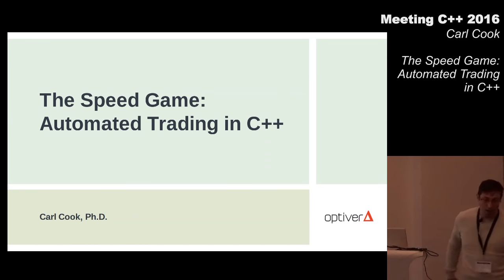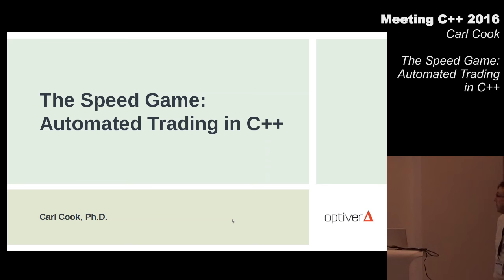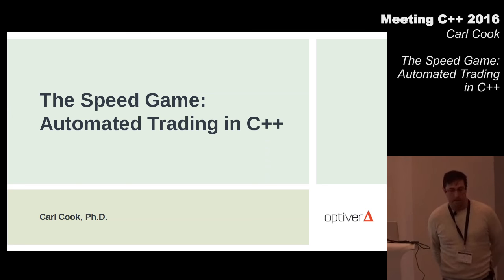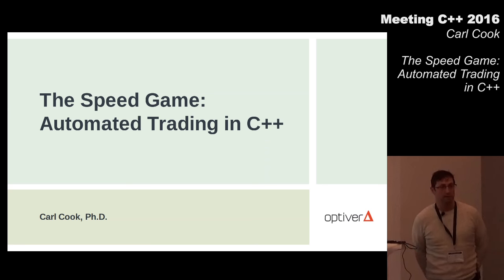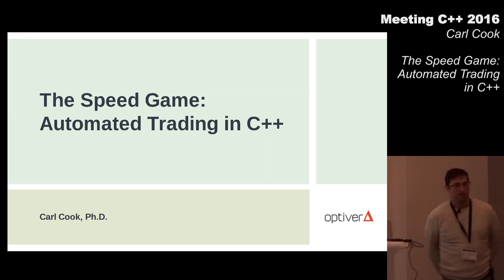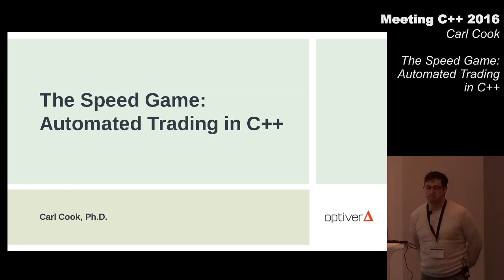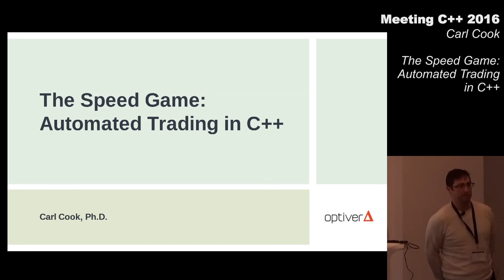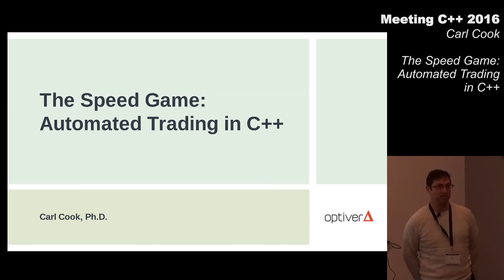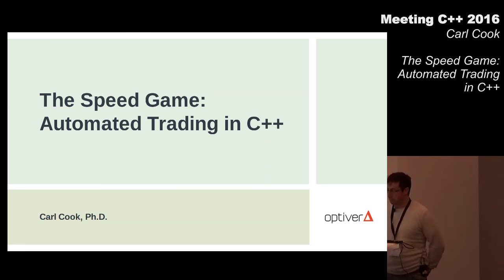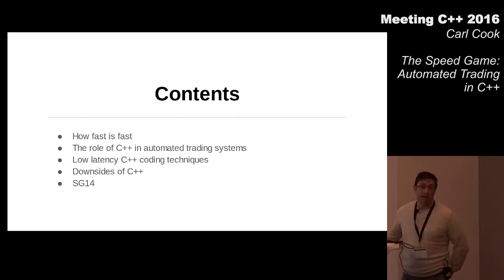My name is Carl. I work for a company called Optiva, which is a global electronic market maker. The talk is really about how trading companies develop auto trading systems in C++ that are basically as fast as you can possibly make them go. There are competitors who are doing this just as fast as you, so that last little bit of speed makes the difference between a successful system and an unsuccessful one.